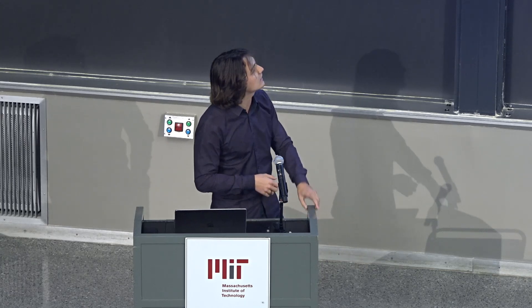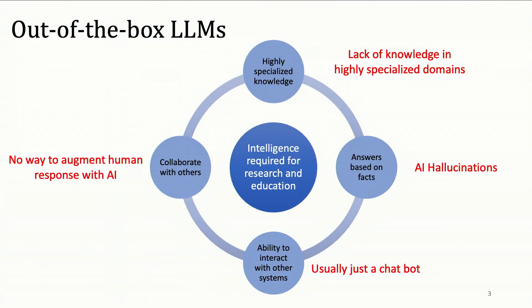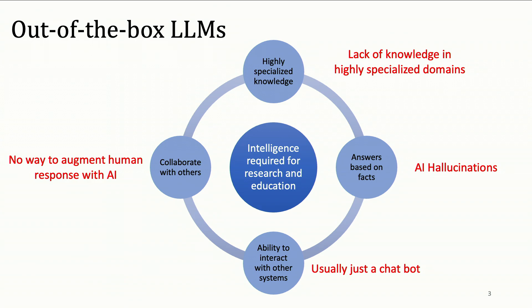However, out-of-the-box large language models like ChatGPT or Google's Gemini don't do this. They lack knowledge in very highly specialized domains. They still fall victim to hallucinations, so their answers aren't purely based on facts. And usually the interface you have is just a chatbot, with no way to work with a human in real time besides just a back and forth on a chat interface.